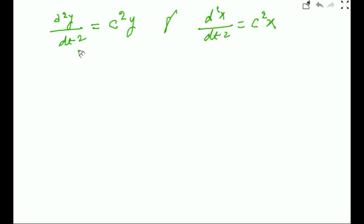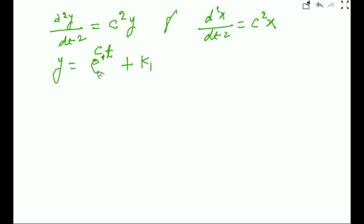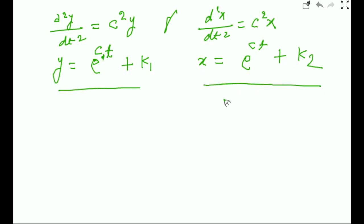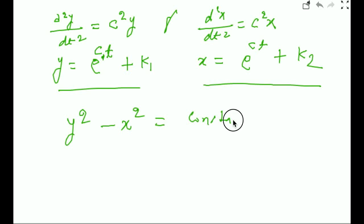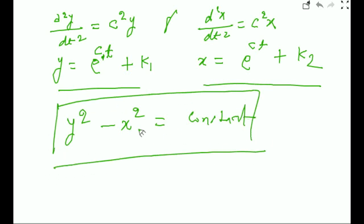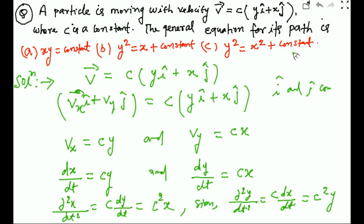The solution to d²y/dt² = c²y is y = e^(ct + k₁), and similarly x = e^(ct + k₂). Since x and y have similar exponential solutions, y² − x² equals a constant. Therefore the general equation of the path is y² = x² + C, where C is a constant.